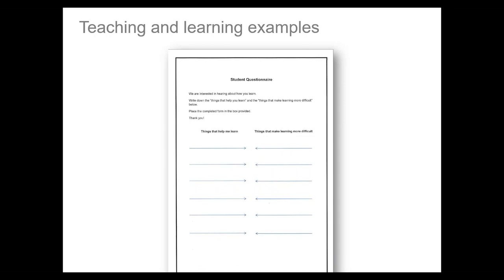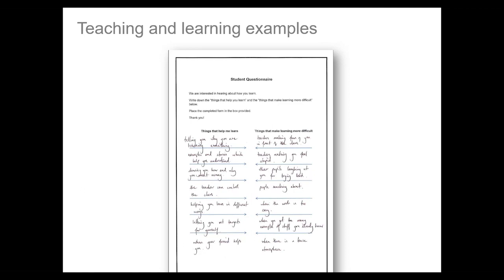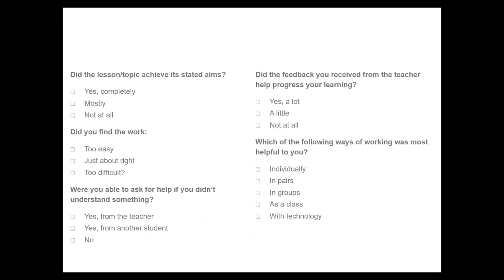Here is a student voice questionnaire. If you talk to students themselves, they have a very good idea about barriers to learning — what helps them learn and what makes learning more difficult — and this can be really useful to set targets and improve outcomes. What we also did at the end of each topic, unit, or even each lesson was a review done by the students: did this lesson or topic achieve its stated aims, did you find the work too easy, about right, or too difficult, did you receive feedback, and which ways of working do you find most helpful? This is also useful feedback to inform lesson planning.